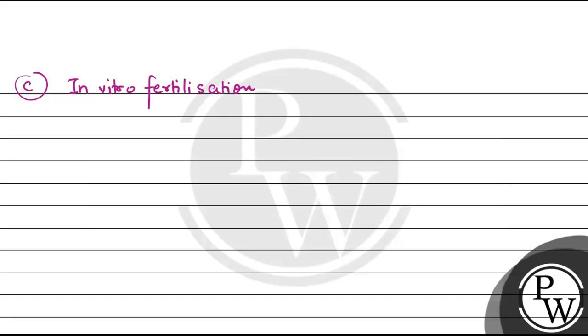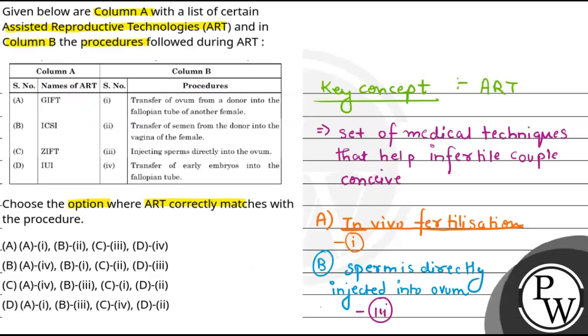In this, the early embryos with up to eight blastomeres are transferred using the ZIFT process. So the correct match for C is iv.